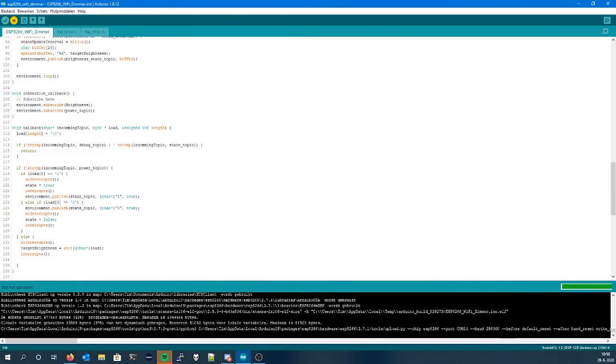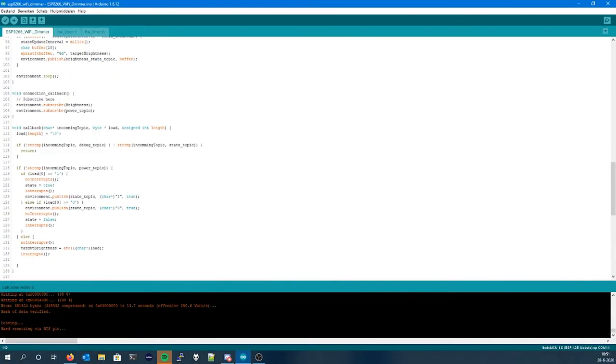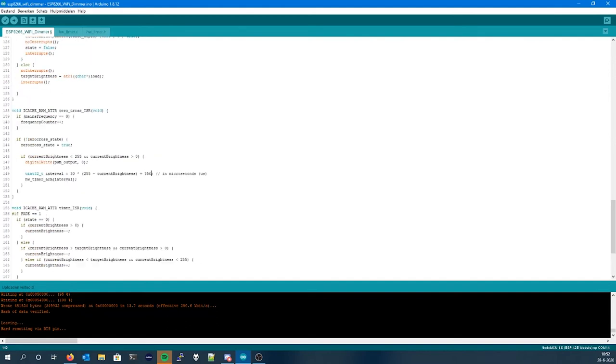After uploading the code that is adjusted to work with the secure MQTT broker I created in a previous video, and after connecting the ESP8266 to the dimmer, I was successfully able to dim a light.